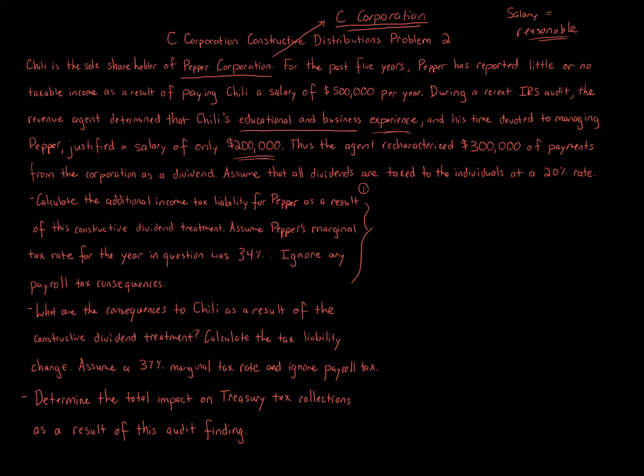The IRS is basically saying, based on educational background and business experience, we only think that Chili should be paid around $200,000. They look at the National Labor Bureau and those departments to get an idea of what the averages are. It's difficult for the IRS to do this because it's so subjective, but they do have averages they use. If it's 200,000 average and it's 250, they're probably not going to say anything. But if it's 200,000 and they're doing 500,000, that's when the IRS comes in and questions it. So it's basically a $300,000 amount that the IRS is recharacterizing.